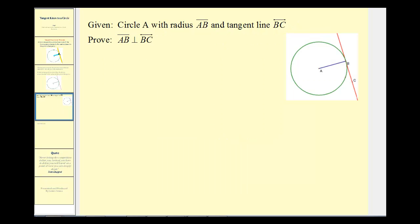Here's our diagram where line BC is tangent to the circle at point B and segment AB is the radius of the circle. Using an indirect proof, we'll start by assuming that segment AB is not perpendicular to line BC.